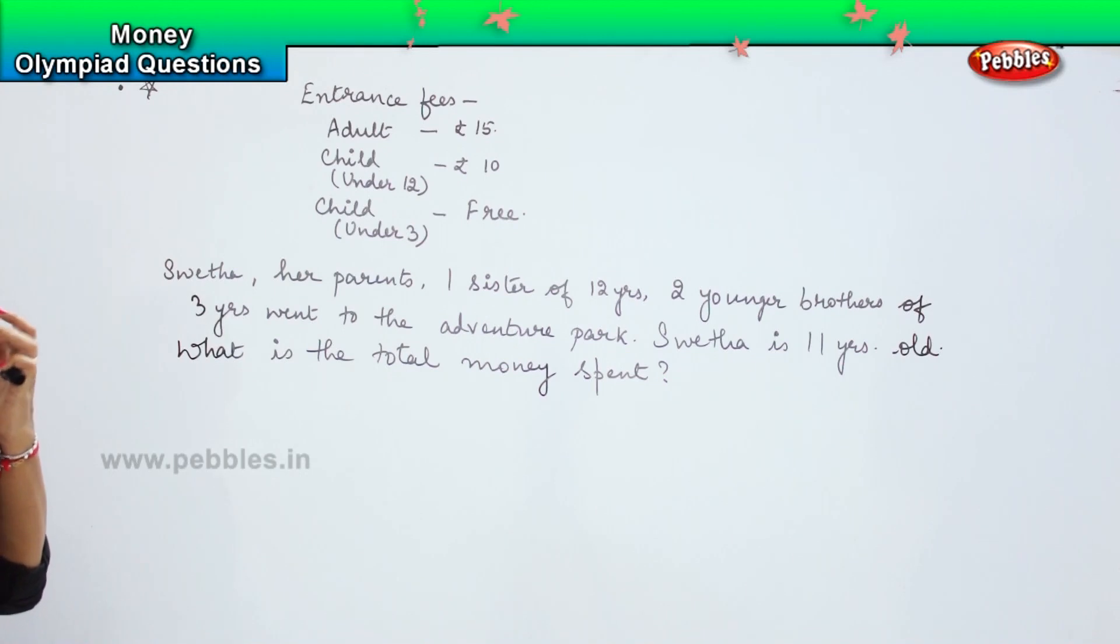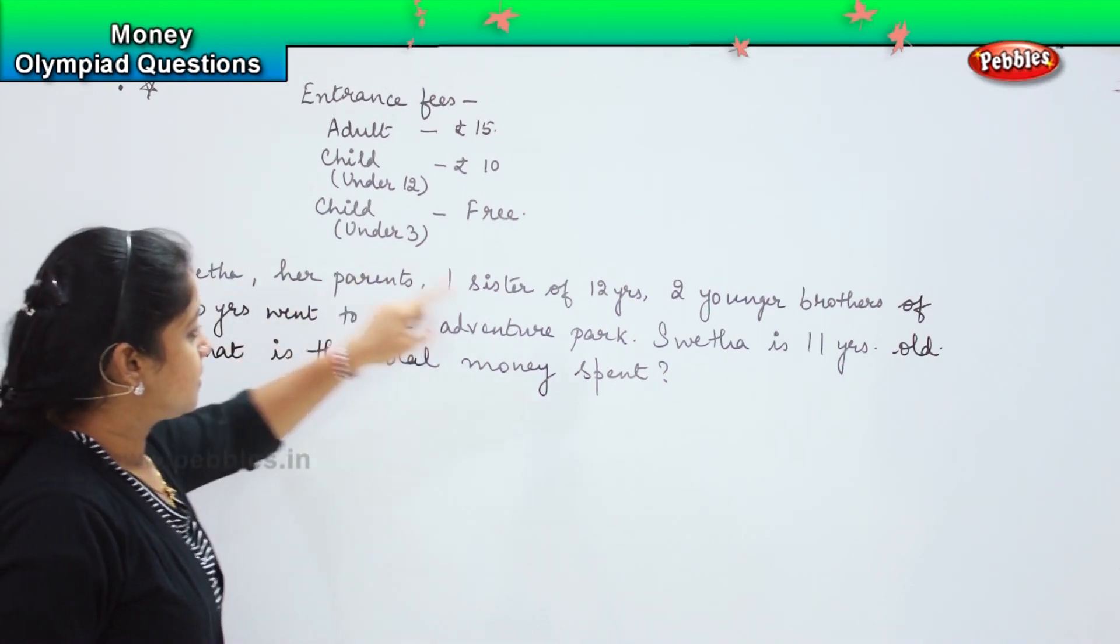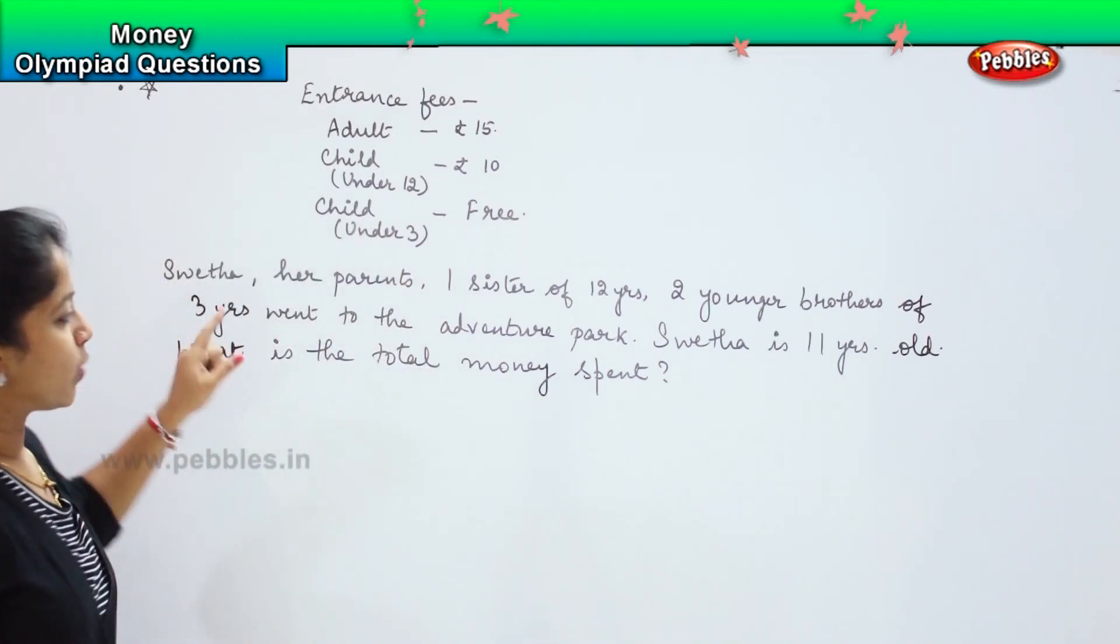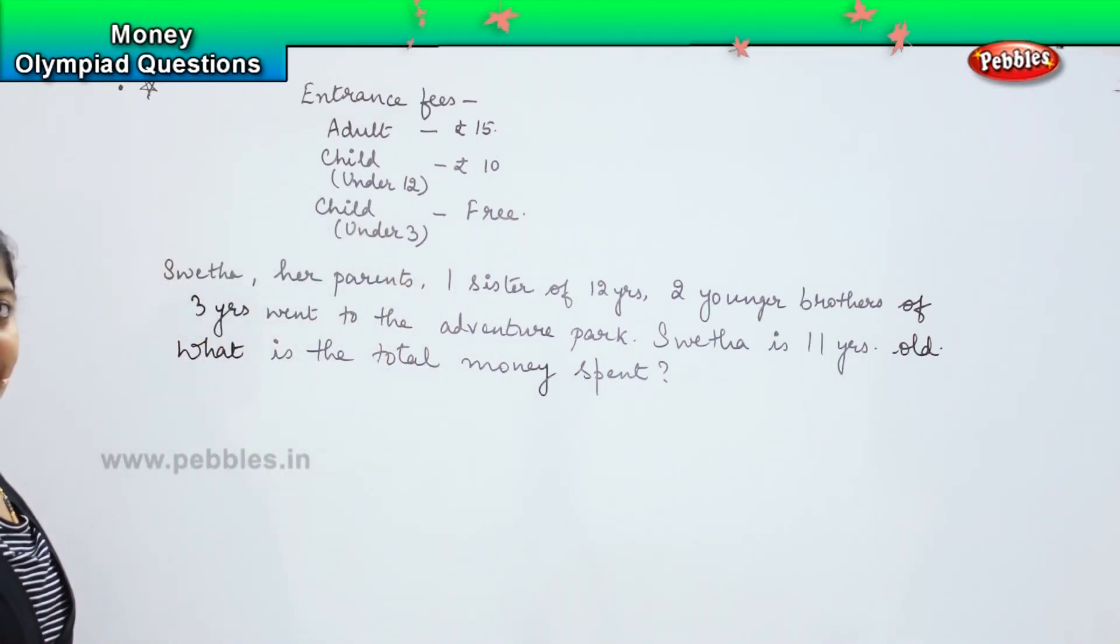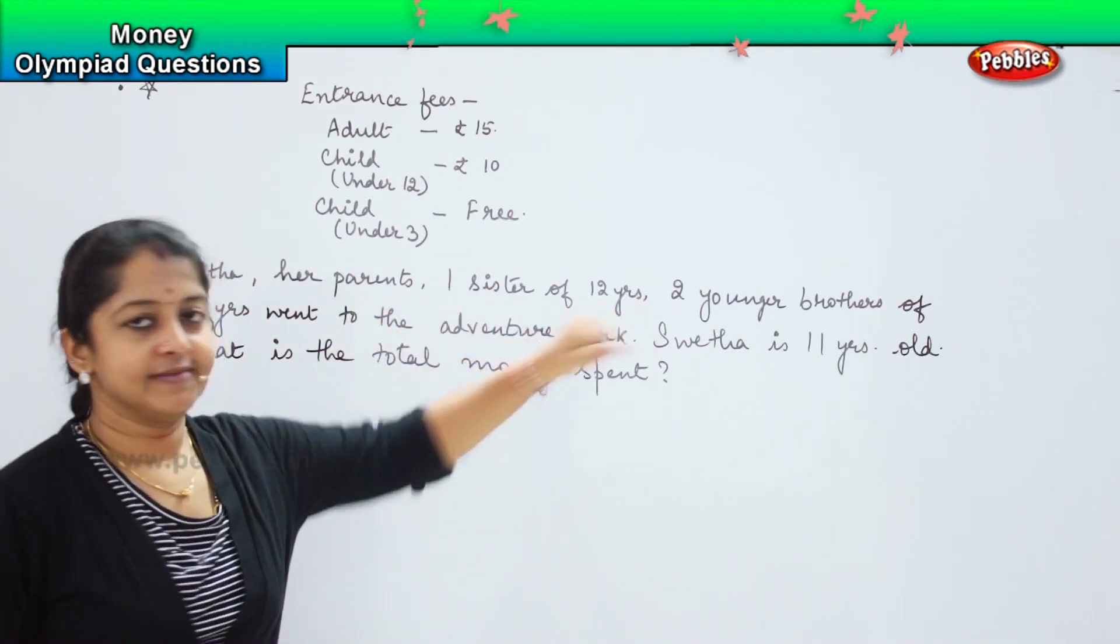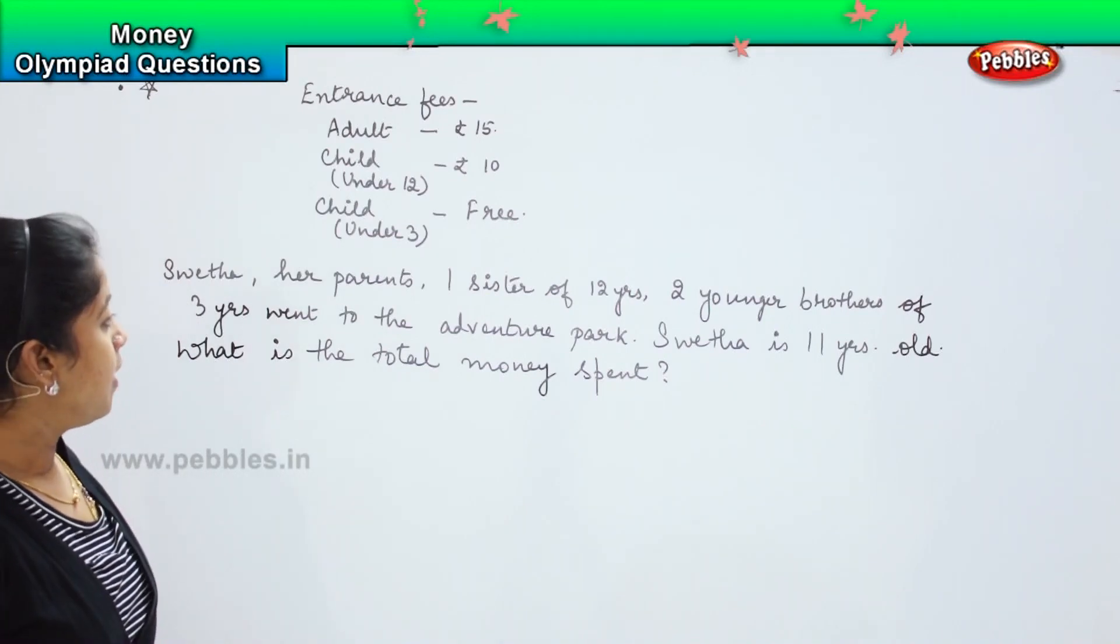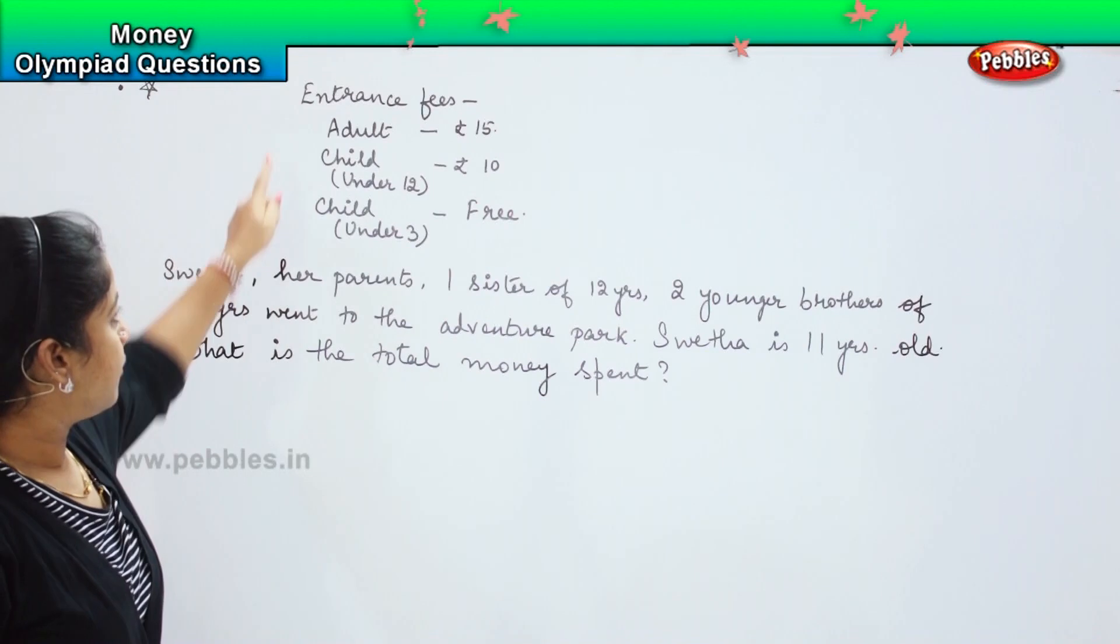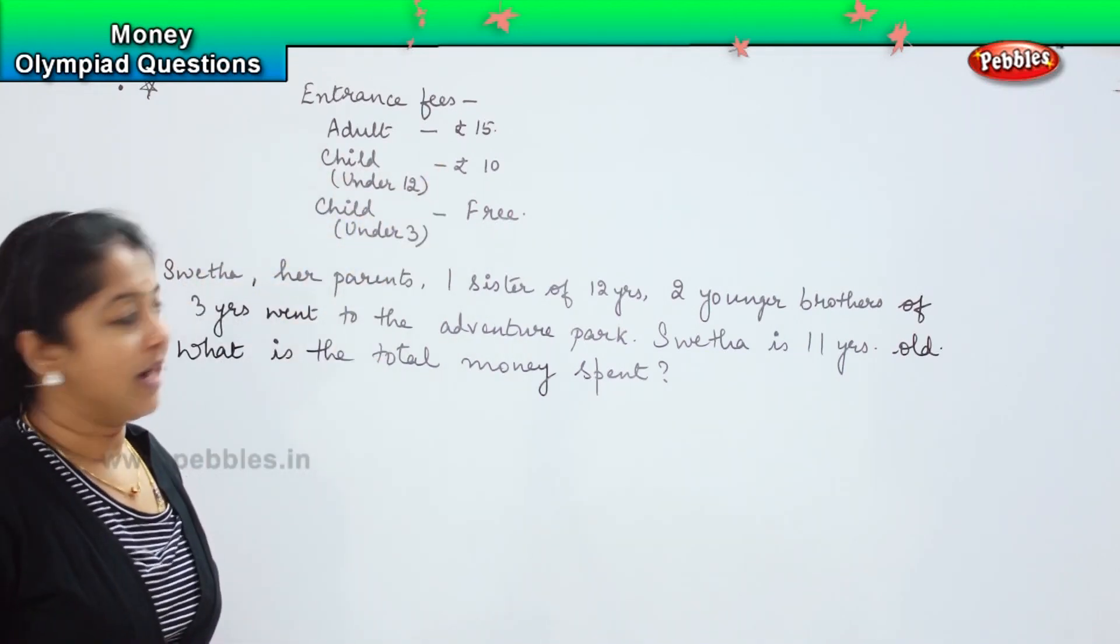They say that Shweta, parents, one sister of 12 years, two younger brothers of 3 years, went to the Adventure Park. So how many people are there in total? Shweta is 1, her parents 2, which means 3, 4, 5, 6 members went. But here, they have given the slab rate also, because the rate is not the same for everyone.